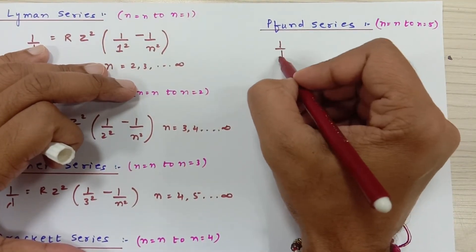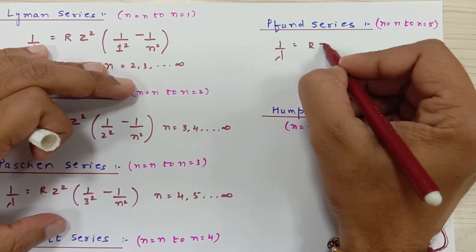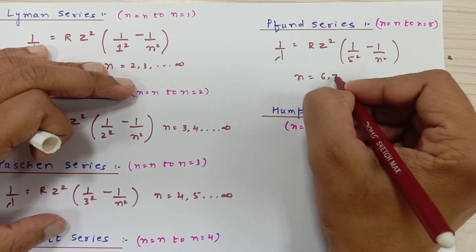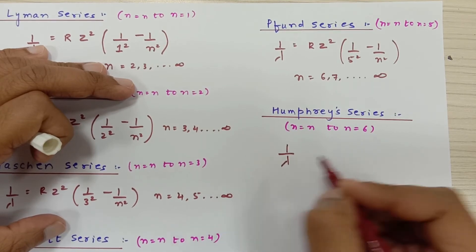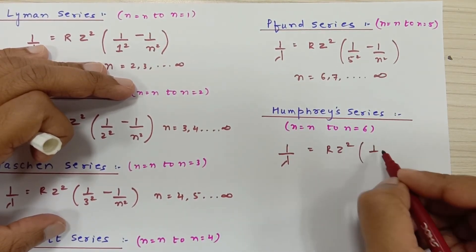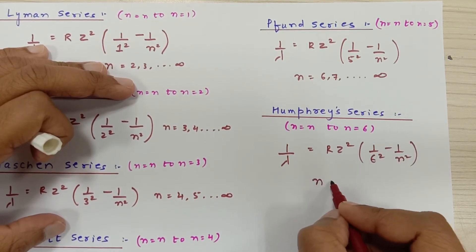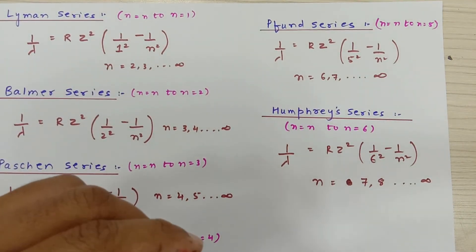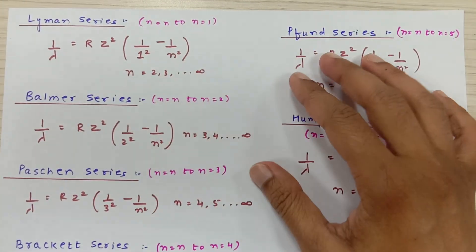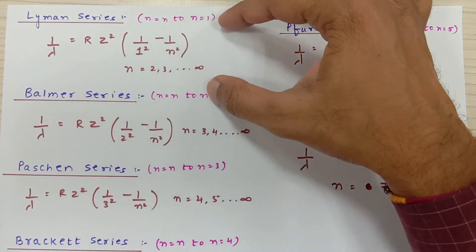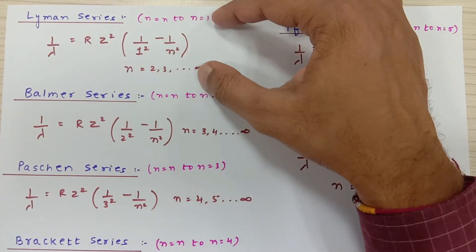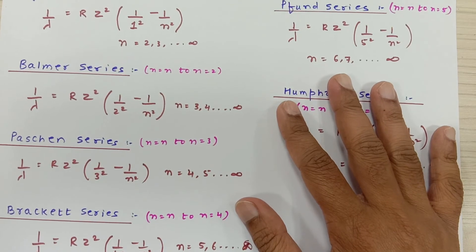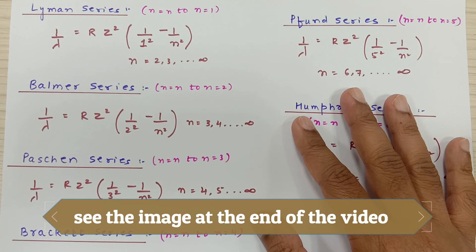For the Pfund series: all electrons fall into the 5th orbit, so 1 upon lambda equals R times Z² times (1/5² minus 1/N²), where N can be 6, 7, ... up to infinity. For the Humphrey series: 1 upon lambda equals R times Z² times (1/6² minus 1/N²), where N can take any value greater than 6. For hydrogen, taking Z equal to 1: Lyman series wavelengths are ultraviolet, Balmer are visible, and Paschen, Brackett, Pfund, and Humphrey are infrared and far infrared. Hopefully you have understood the entire concept — please subscribe to my channel. Thank you for watching.